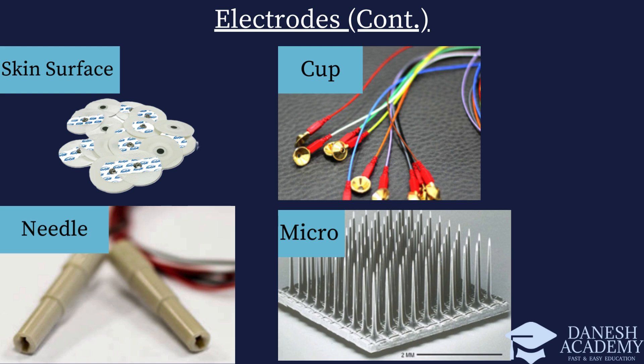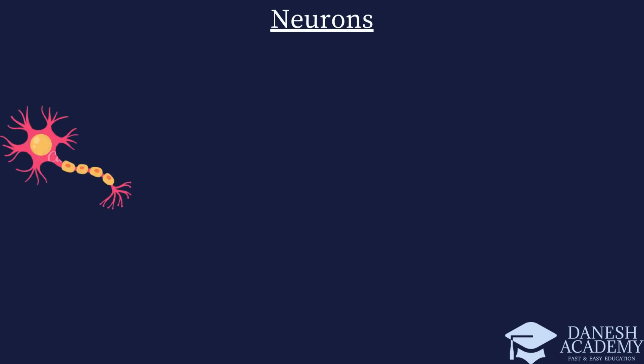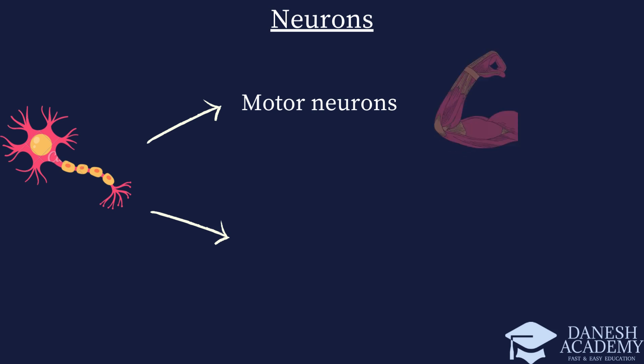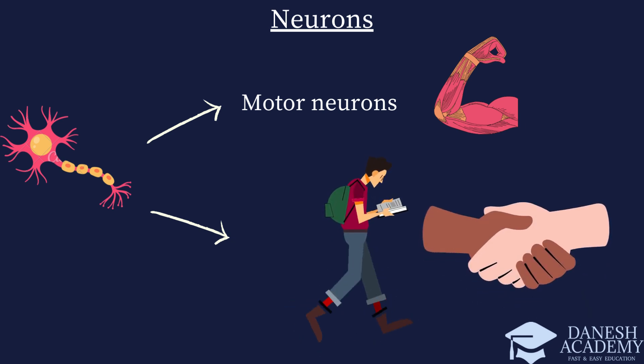Now that you understand how biosignals are obtained, let's delve into the crucial element that transports these signals to the designated area for acquisition. Motor neurons are responsible for transmitting messages from the central nervous system to the muscles, enabling movement and physical actions. When a motor neuron is activated, it triggers the contraction of muscle fibers, allowing us to perform a wide range of voluntary movements — from walking and running to grasping and manipulating objects.